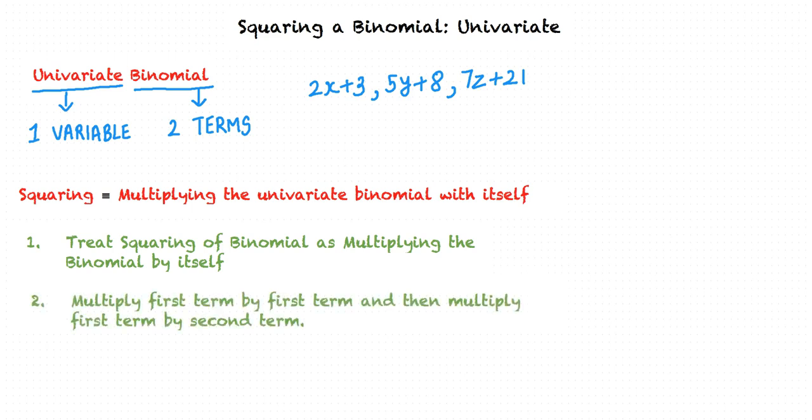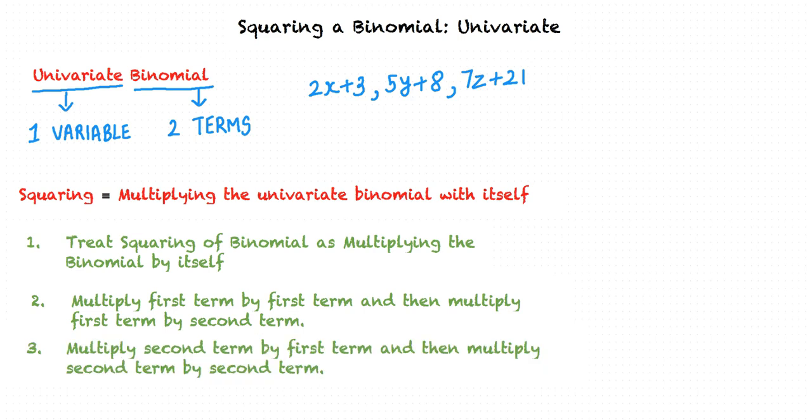We then multiply the first term by the first term, and then multiply the first term by the second term. Next, we multiply the second term by the first term, and then multiply the second term by the second term.